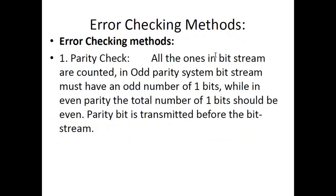Now there are some methods to detect if there have been any errors during transmission. The first method is a parity check. All the ones in a bit stream are counted. There are two possible systems: odd parity and even parity. In odd parity, the bit stream must have an odd number of one bits, while in even parity the total number of one bits should be even.